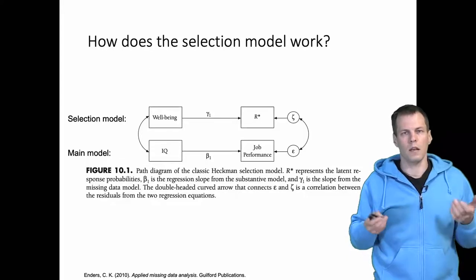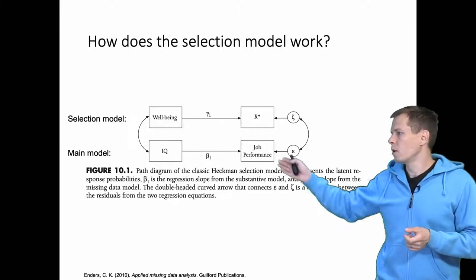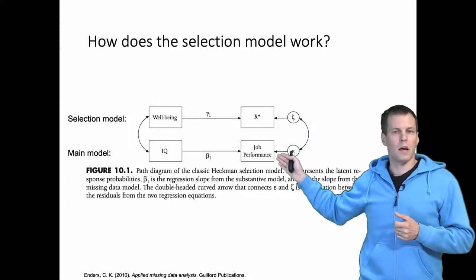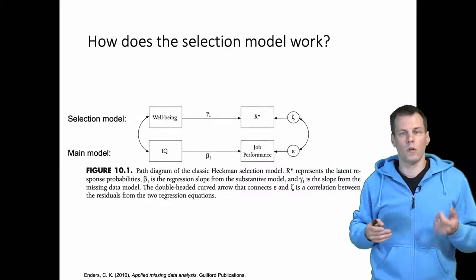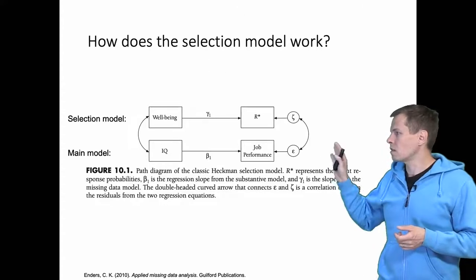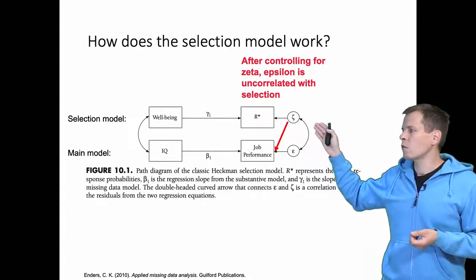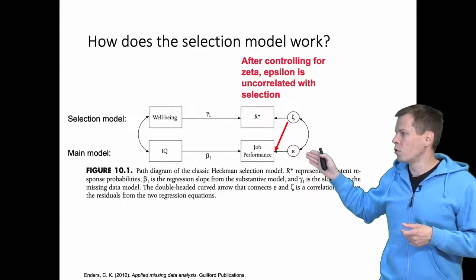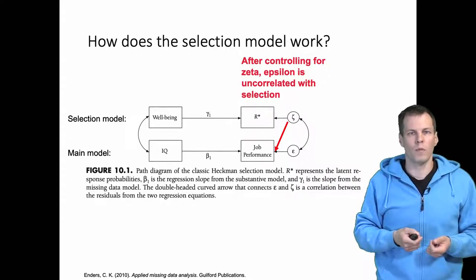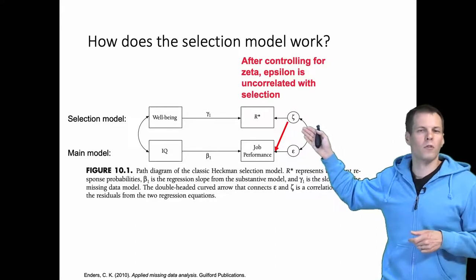The key insight is that we try to control for zeta. If we could control for zeta somehow, then epsilon would be uncorrelated with the selection. This is like an omitted variable problem: if we can find the right control variable, then epsilon after controlling for it will be uncorrelated with the selection. The key challenge is that we need to estimate zeta — and this is where the probit model and the normal distribution assumption become important.